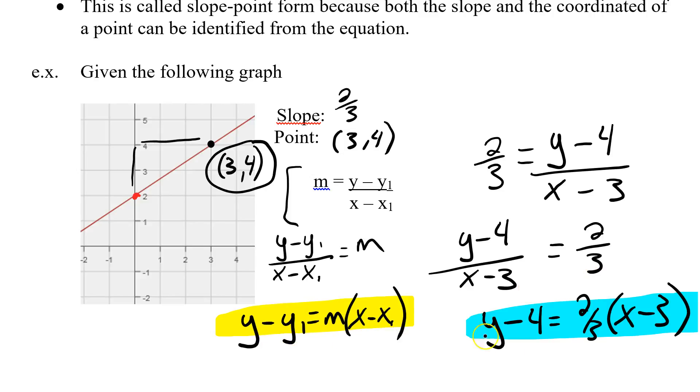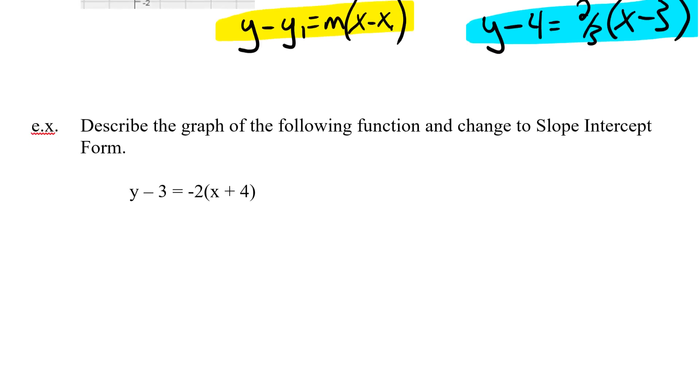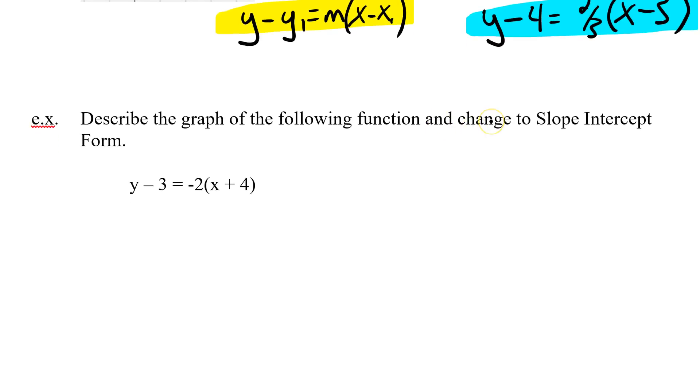Now the same holds true. If I was to give you this formula and ask you to find the point, you'd have to know that these x and the y's change from negatives to positives. So let's look at another example here. Describe the graph of the following function and change to slope-intercept form. So I'm asking you to describe it. What I'm really looking for is what's the slope and what is the point. So my slope, I can just simply pull directly from my equation. Remember, y minus y1 equals slope times x minus x1. So my slope is outside the brackets.